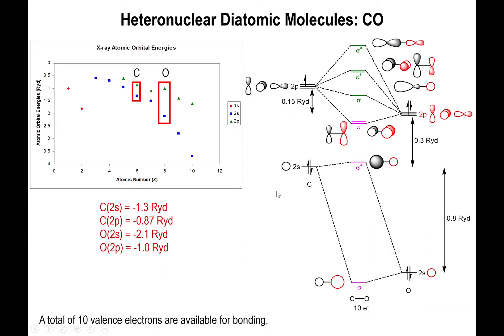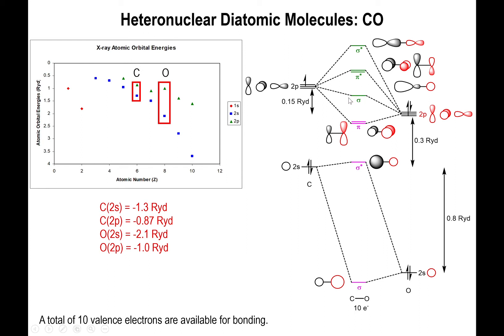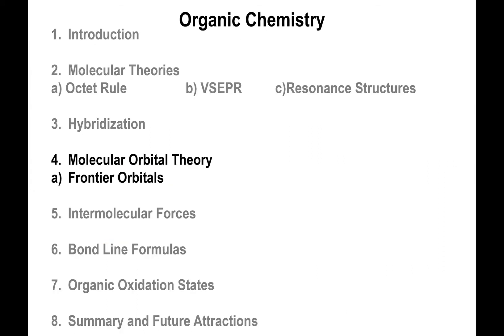A more complicated case is carbon monoxide, where there are s and p orbitals for both elements making up the bonds. Carbon has four valence electrons and oxygen has six, giving ten electrons total to fill into the molecular diagram. We place two on the bottom orbital, two more on the next, four on the pi, and the final two on the sigma, filling all ten valence electrons.